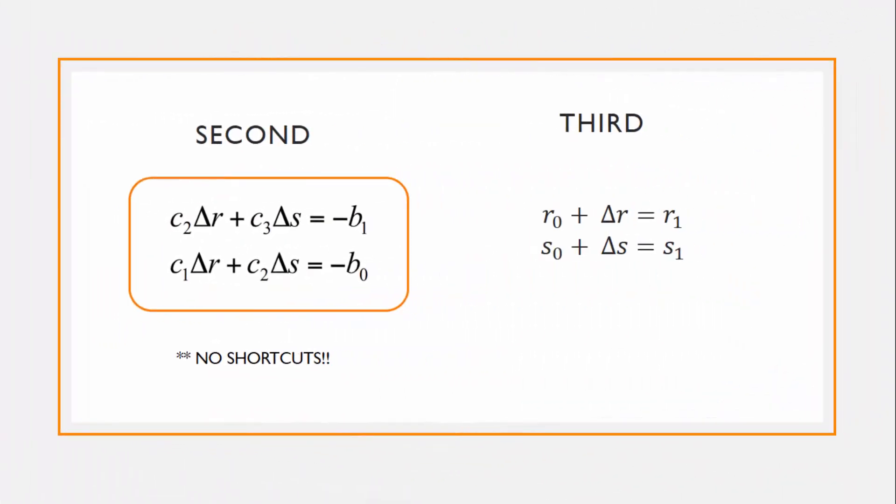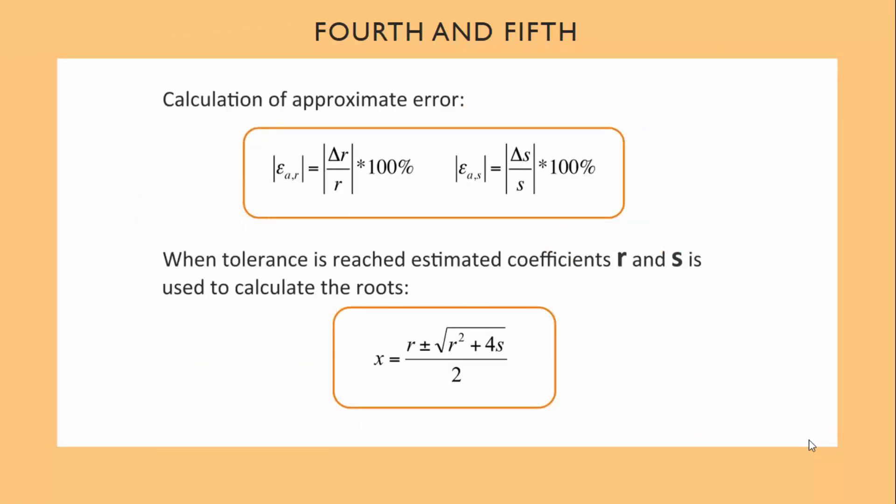After having calculated c1, c2, c3, b1, and b2, we will use this equation to try to solve for delta r and delta s. After solving for these, we would add this to the original r0 and s0 to calculate the new r. Again, there are no shortcuts. With the new r and a new s, we will calculate the approximate error, like any other error in numerical methods.